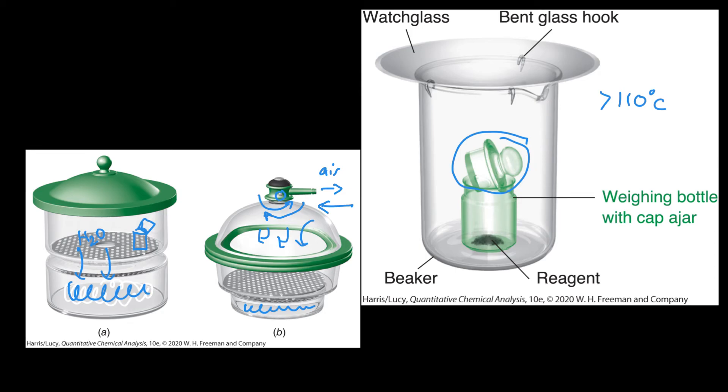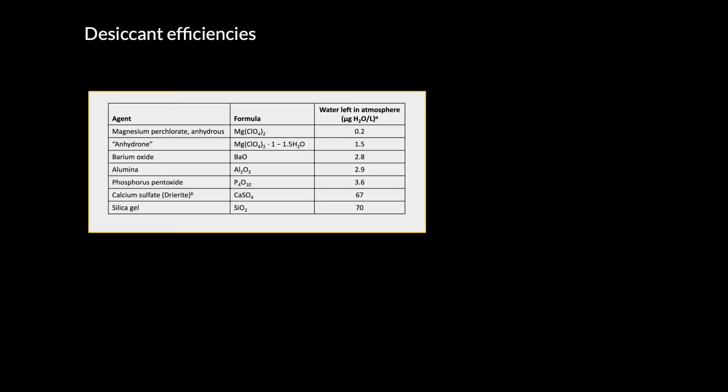There are multiple different kinds of desiccants. This table is from our textbook and lets us know essentially how efficient the desiccant is. We will typically use Drierite, which is anhydrous calcium sulfate with an indicating compound of cobalt-2 chloride, which is blue when dry and pink when wet.